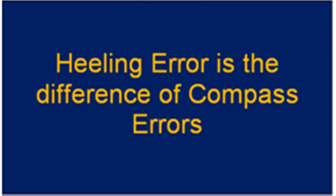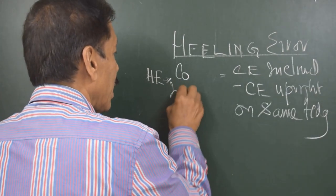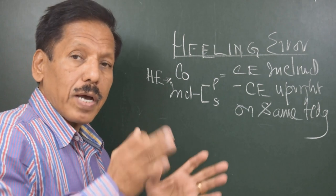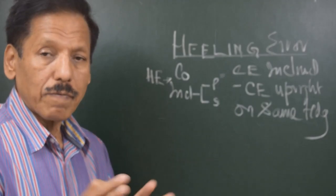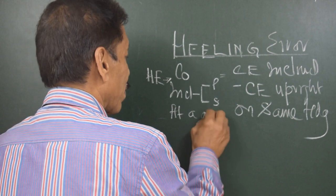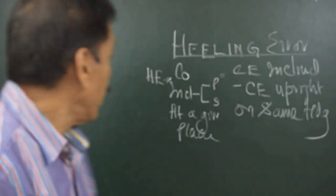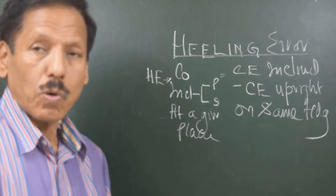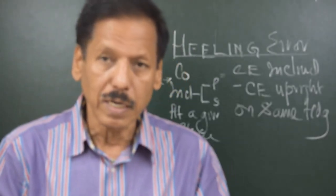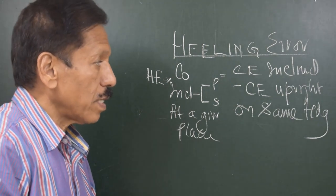Heeling error has to be described in terms of the course on which you are getting this heeling error, the inclination, and whether to port or starboard. You must specify: this heeling error is on such and such course, while the vessel is inclined so many degrees to port or starboard, at a given place. So heeling error is the difference between the compass error when inclined and compass error when upright.